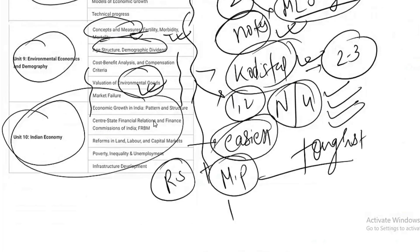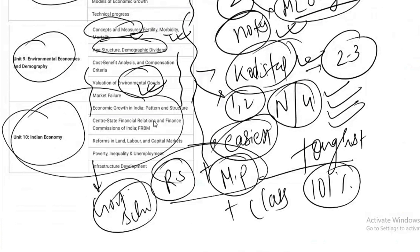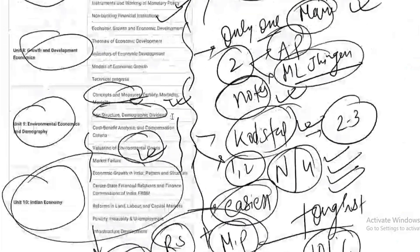It has to be supplemented by Mishra and Puri. These two books are very important for the Indian economy, plus class lectures. Trust me, hundred and one percent you will be ready. It has to be supplemented by government schemes - government schemes are important.